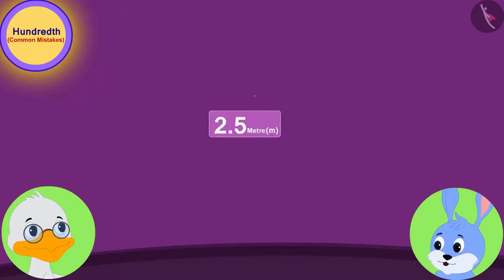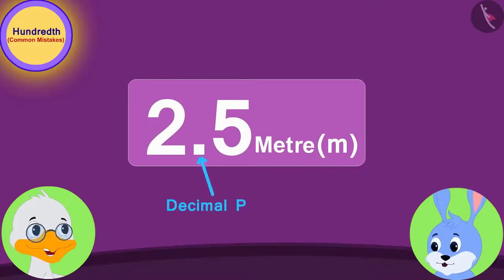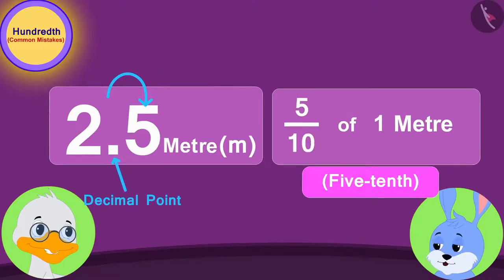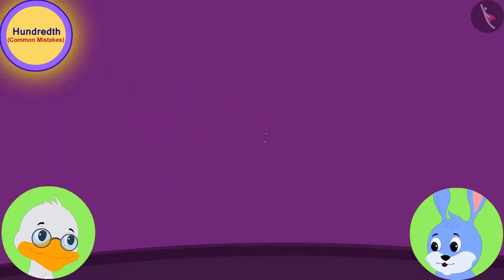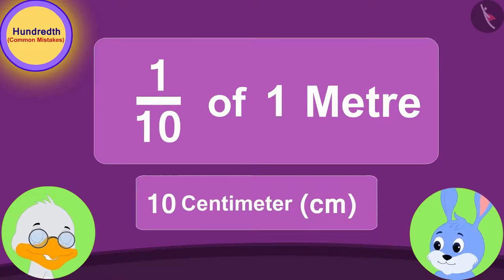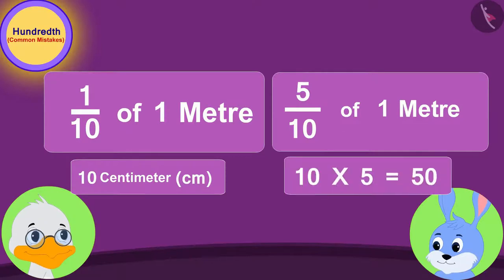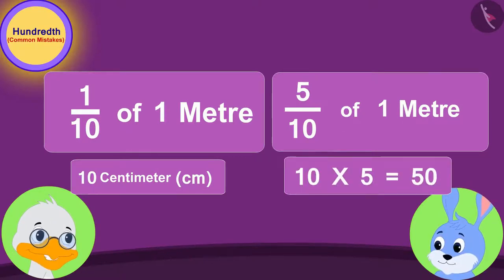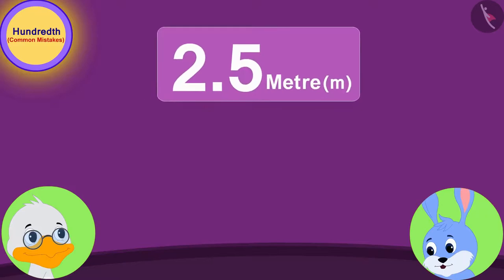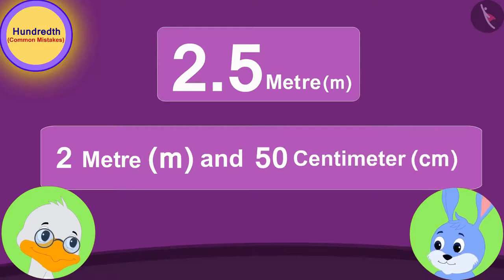Uncle continued, "Now, in the same way, in 2.5 meters, the number after the decimal is 5, or the 5-tenths part of a meter. 1 tenth part of a meter is equal to 10 centimeters. Therefore, the 5-tenths part of a meter will be equal to 10 times 5, or 50 centimeters. Thus, 2.5 meters is equal to 2 meters and 50 centimeters."